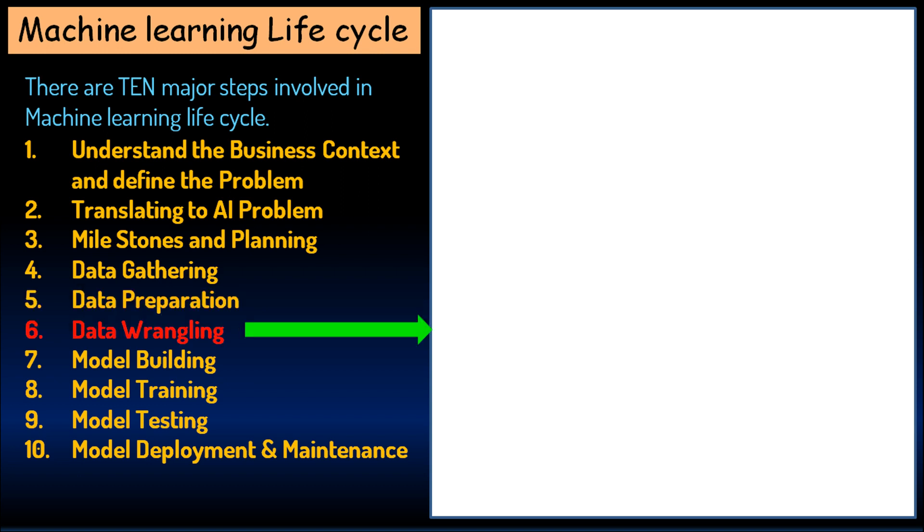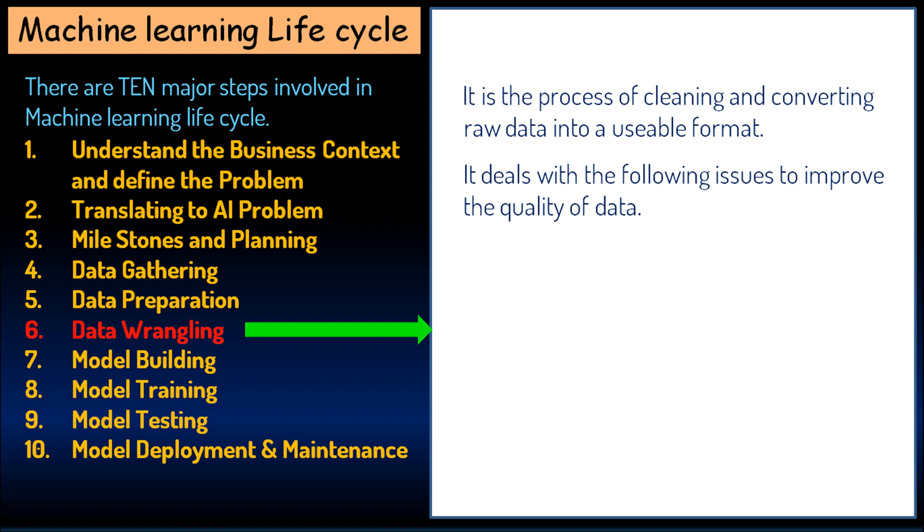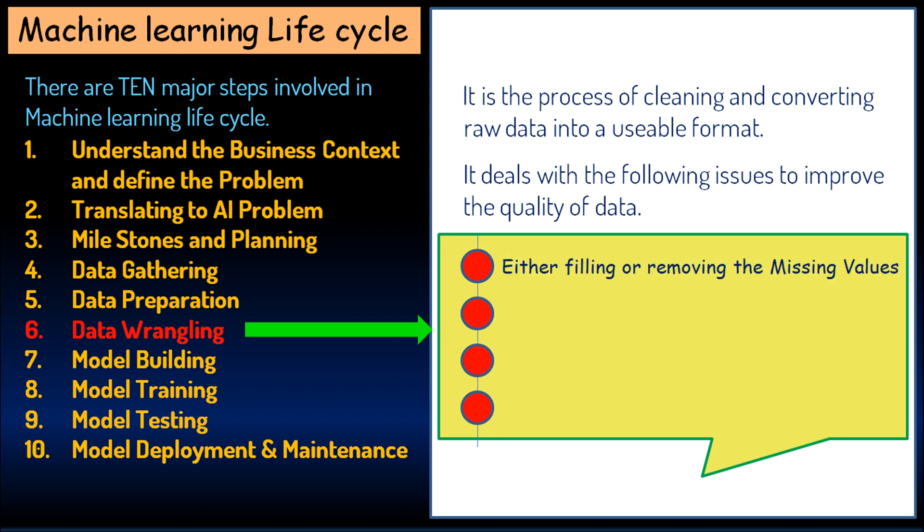The sixth step is data wrangling. It is the process of cleaning and converting raw data into a usable format. It deals with the following issues to improve the quality of data: either filling or removing the missing values, removing duplicate data, removing invalid data, and removing noise.